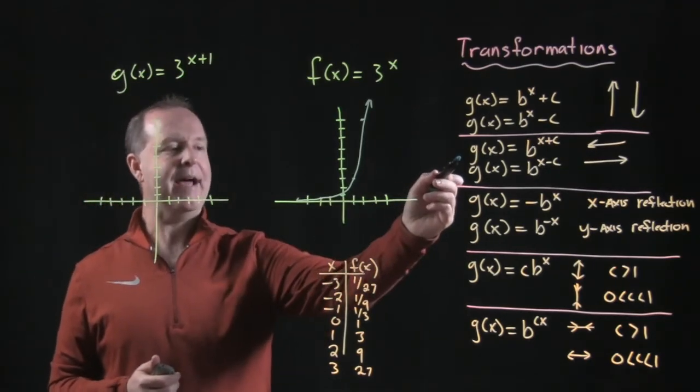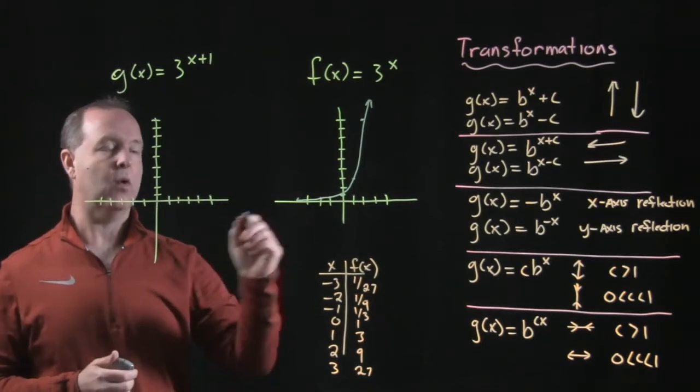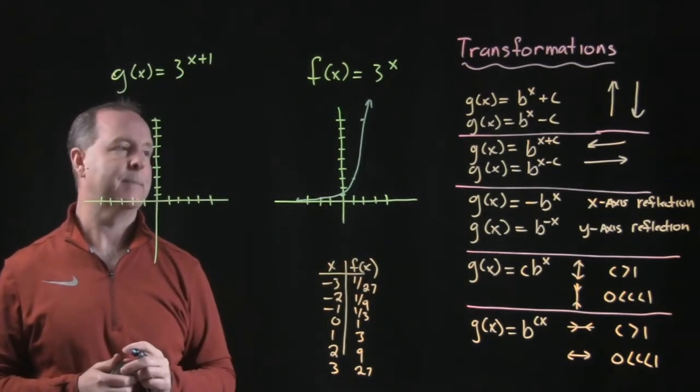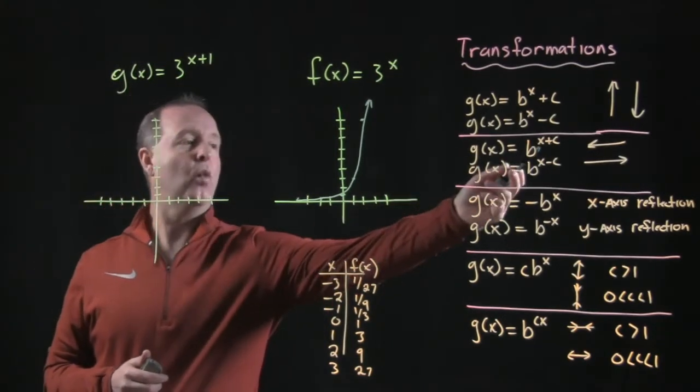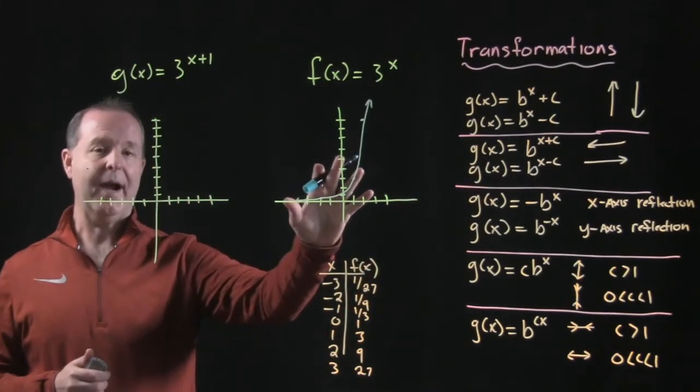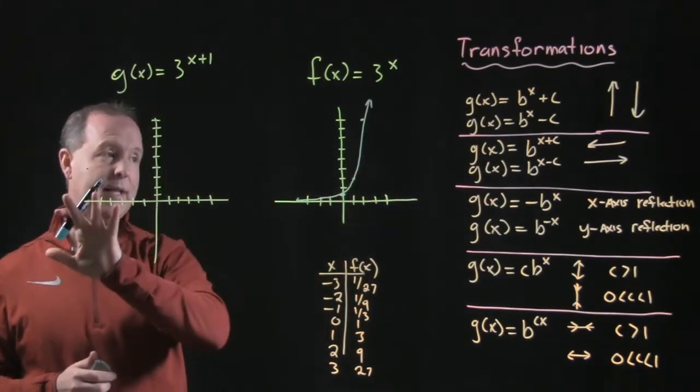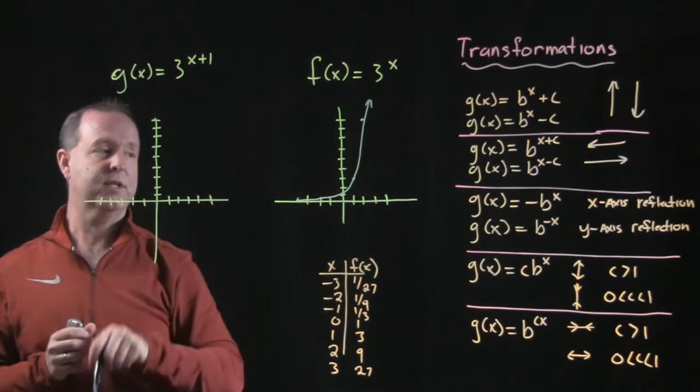Notice that the change happens within the exponent. So what it looks like I have is I have a horizontal shift left or right. I'm adding a 1 to it. So I'm going to take my entire graph and shift it to the left one spot, which is that 1 right there.